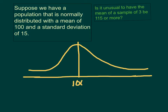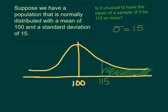Our mean is at 100 and we know that our standard deviation is 15, so I like to write that down up here. We want to know if it's unusual for the sample of 3 to have 115 or more, so 115 is going to fall right about here. And I want to know if it's unusual to be right here, so I want to calculate the probability of this shaded area right here.